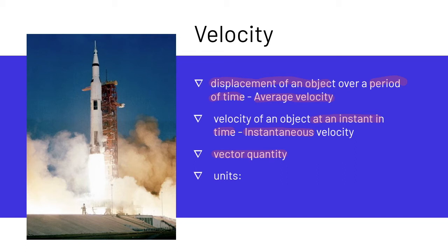So what are some units we can use to talk about velocity? Velocity is a distance over a time, so we could say meters per second, kilometers per hour, or miles per hour. Any of those units would be good velocity units. We're going to mostly use meters per second in this class.